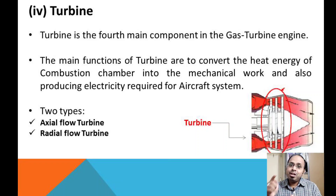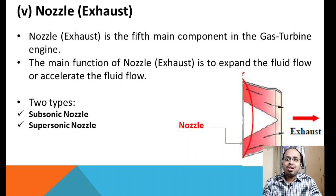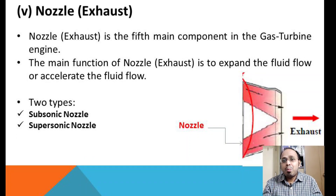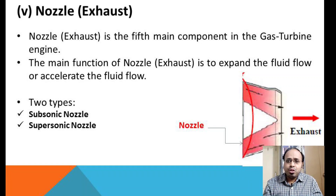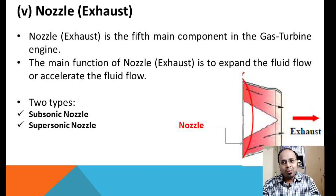In the gas turbine engine, there are two types of turbines: the axial flow turbine and the radial flow turbine. The nozzle, also called the exhaust, is the fifth component. Its main function is to expand and accelerate the flow.